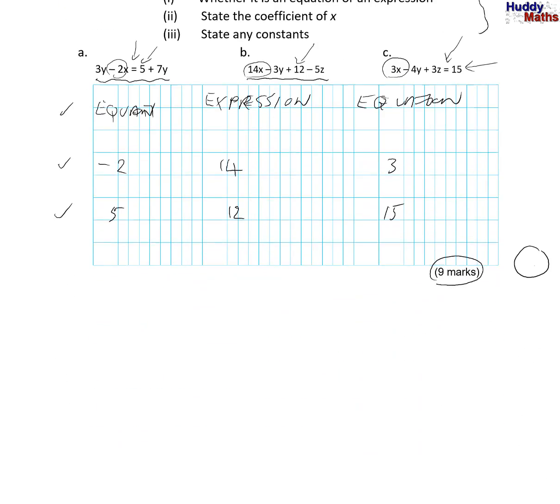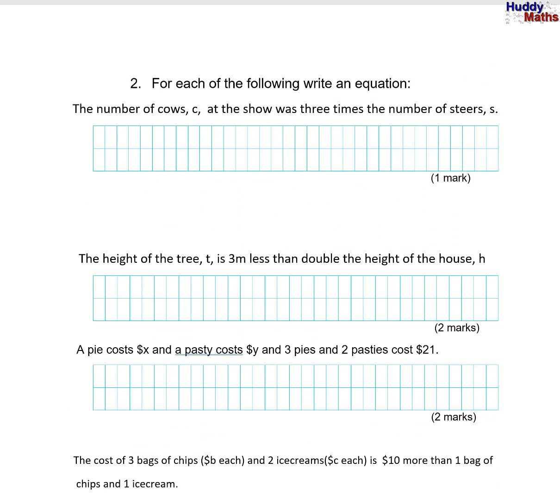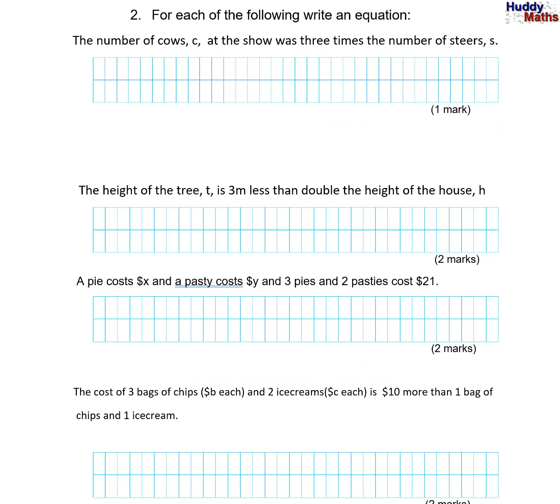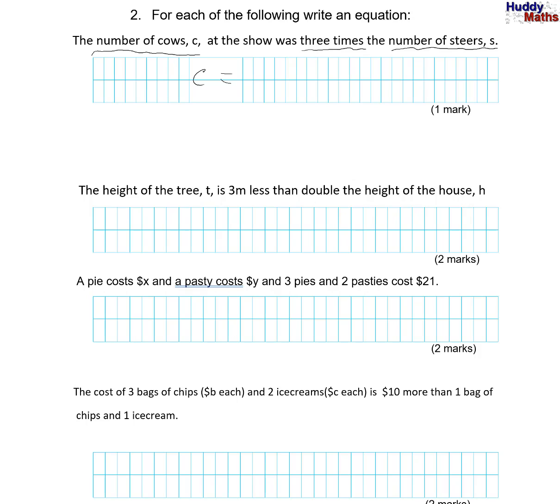Come down and let's look at the next question. And this was making mathematical sentences. Just a small, a little question here. The number of cows. So, better underline that. At the show was three times the number of steers. So number of cows was, so c equals three times the number of steers. Three times s. I'll just write that underneath here. c equals three s.